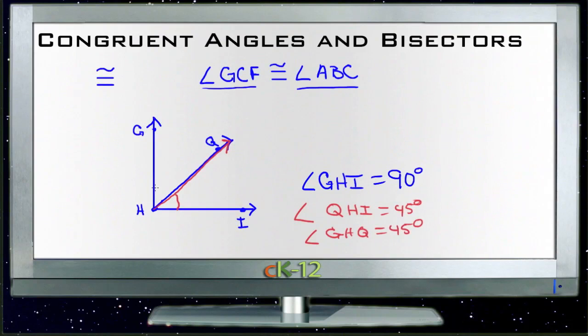Now the other way you might see this marked is you would show these two angles here, GHQ and QHI, and they would have maybe both one little hash mark. Since they're both marked the same with that one little hash mark, that means they're the same angle.